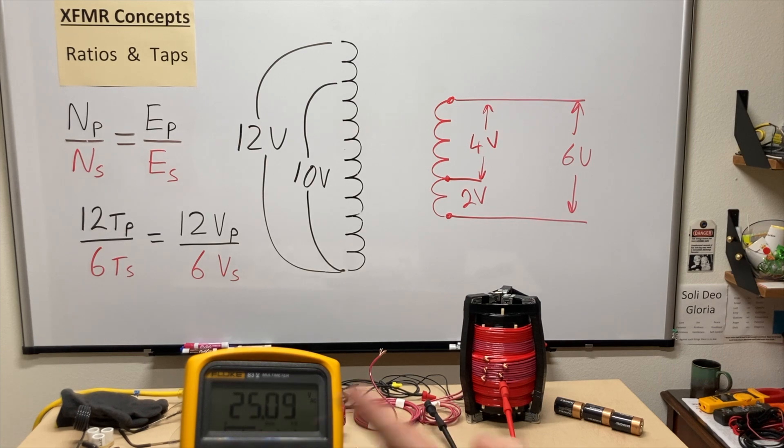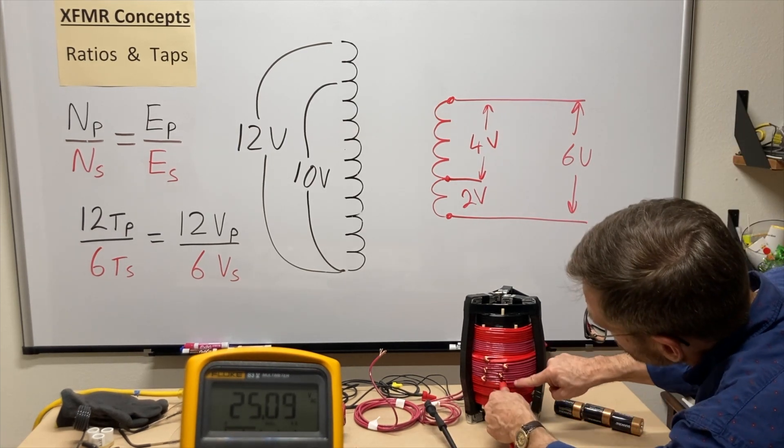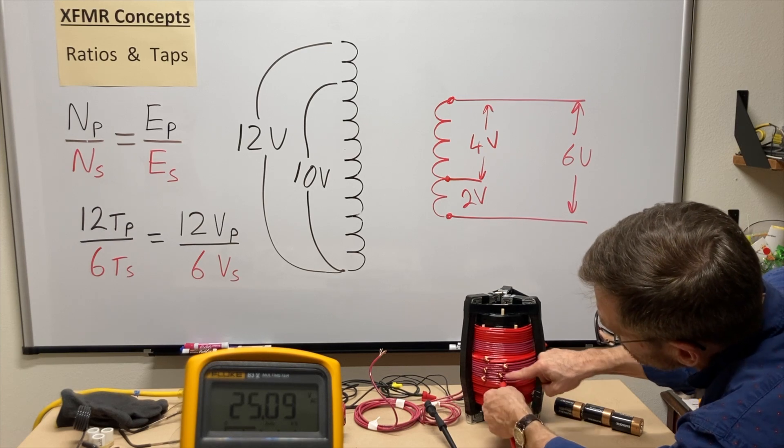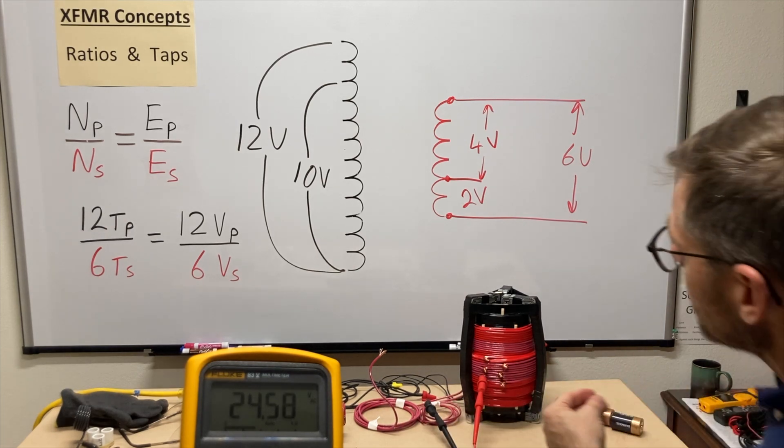What do we get? Instead of 25 and a half, I'm down to 25. Okay, it's still too high. So let's take off two more turns and tap in over here. What am I at? 24.58.